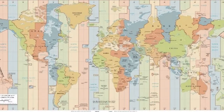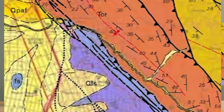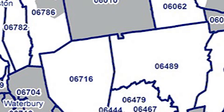Other types of maps include time zone maps, geologic maps, and zip code maps. Did you know there is a zip code map? Next time you send a letter, check the zip code.